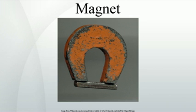Although ferromagnetic materials are the only ones attracted to a magnet strongly enough to be commonly considered magnetic, all other substances respond weakly to a magnetic field, by one of several other types of magnetism.